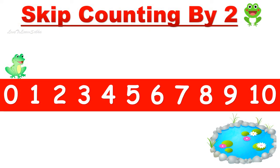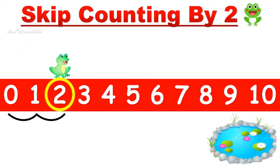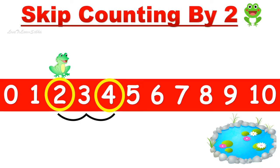Now let us understand skip counting by two. Here the little toad needs to reach the pond, and for this he has to skip count by two. He starts at number zero and moves two steps: one, two — so the number is two. The toad then moves from two: one, two — so the number is four.